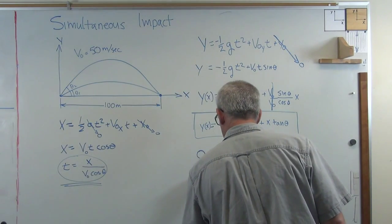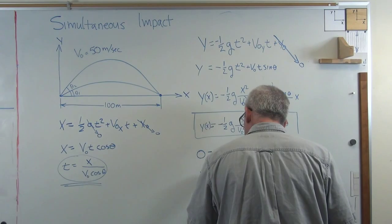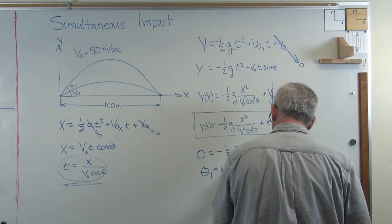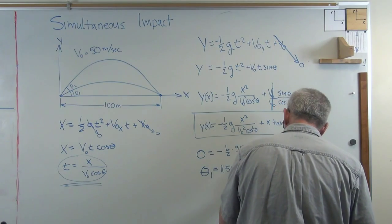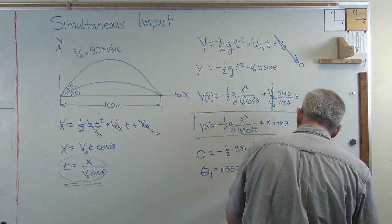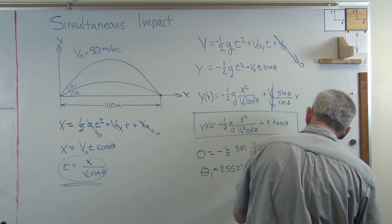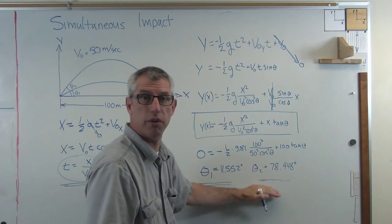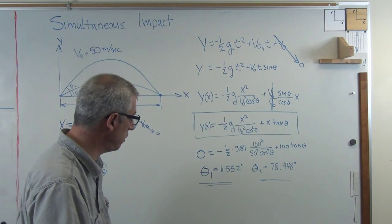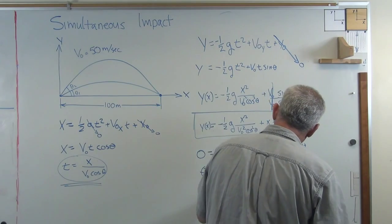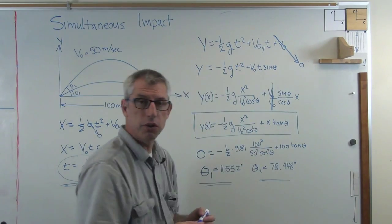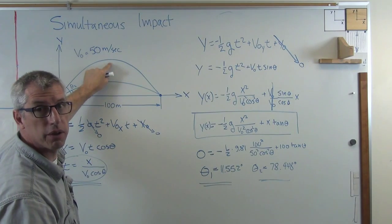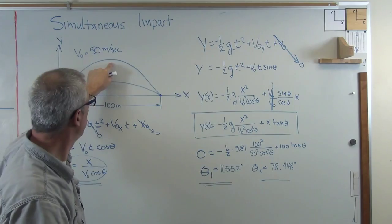One of them, theta₁, that's the low angle, is 11.552 degrees. And theta₂ equals 78.448 degrees. Okay, so there's that and that. Make sure those are in the frame. Got it. Okay, so those are the two launch angles. There. So those are the two launch angles. The low one is 11.5 degrees pretty much, and the other one, the high angle, is 78.5 degrees pretty much.